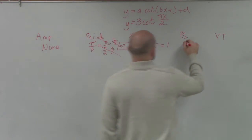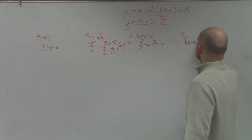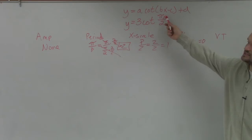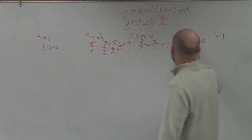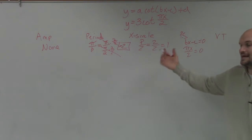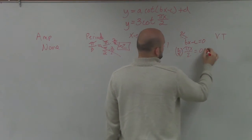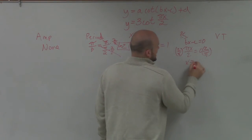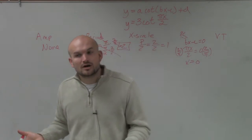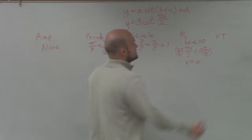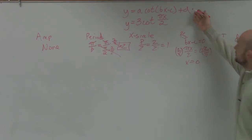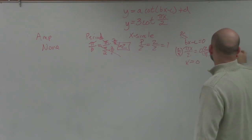The next thing is to take your phase shift. bx minus c equals 0, just like that. Take whatever's inside of there, set equal to 0. So here I have pi x divided by 2 equals 0. When you guys again multiply by the reciprocal on both sides, what you guys get is x equals 0. So that's where I'm going to want to start. And the last case is the vertical translation, which is your d, which in this case we do not have, so it's none.